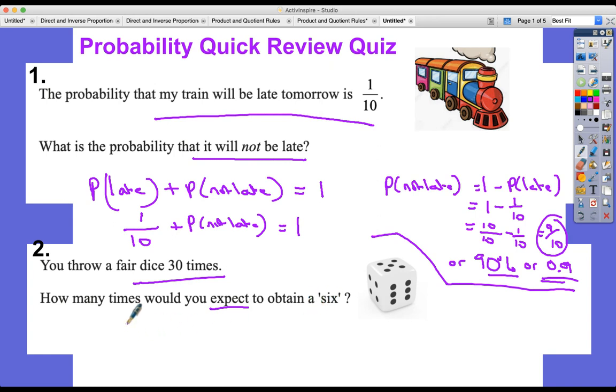The probability of getting a six, it's a fair dice, is a six outcome, so it's one in six chance of getting a six. That happens 30 times, so of those 30 times you'd expect to see a six one-sixth of the time. So if we do one-sixth of 30, we've multiplied 30 by one-sixth. Hopefully you got the answer of five times.